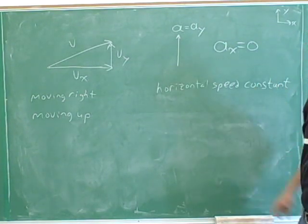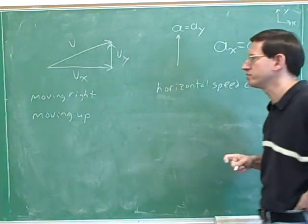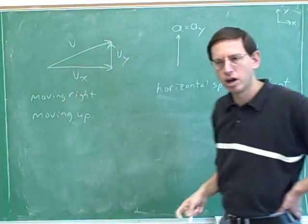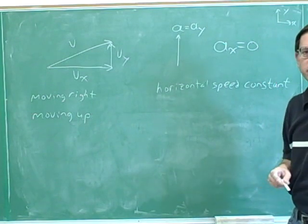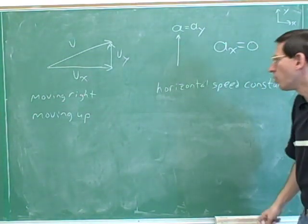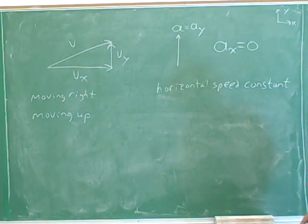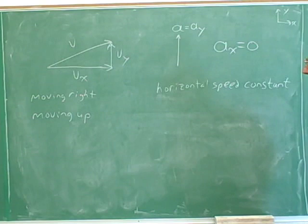Notice that zero acceleration does not mean that you're not moving. The acceleration doesn't tell you how you're moving — it's the velocity that tells you how you're moving. All the acceleration tells you is how the speed is changing. In this case, the speed is not changing. In general, the acceleration tells you how the velocity is changing, but our x component of velocity is not changing here.